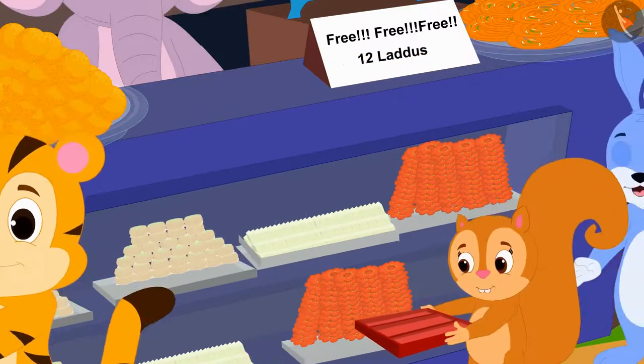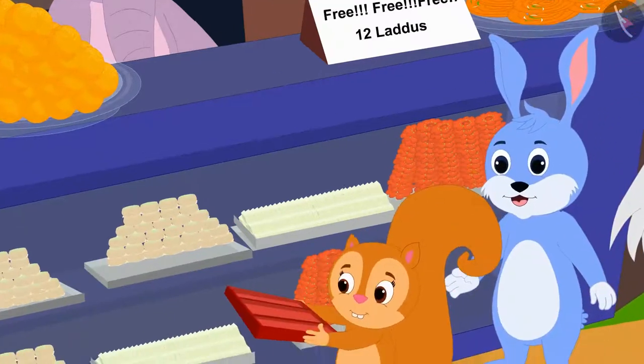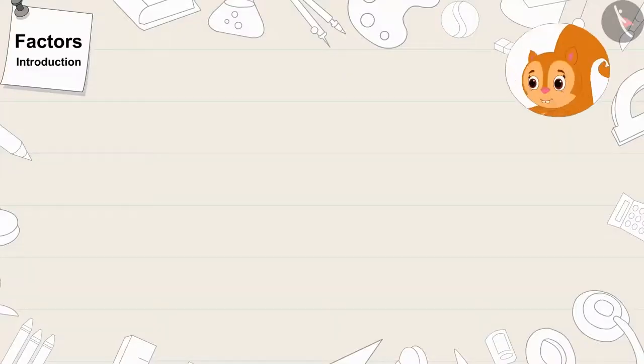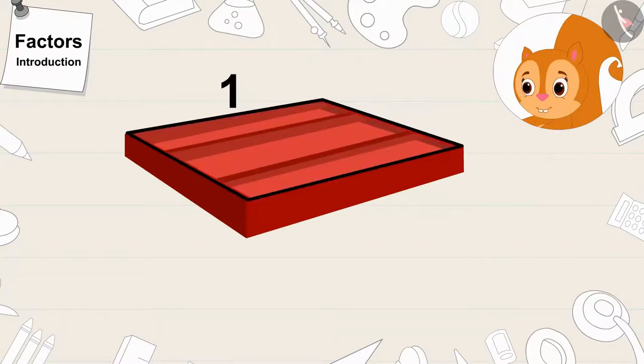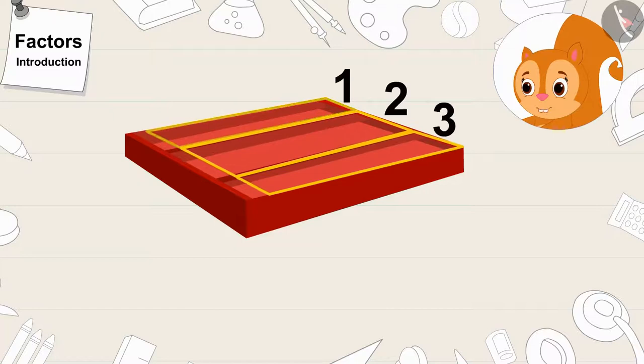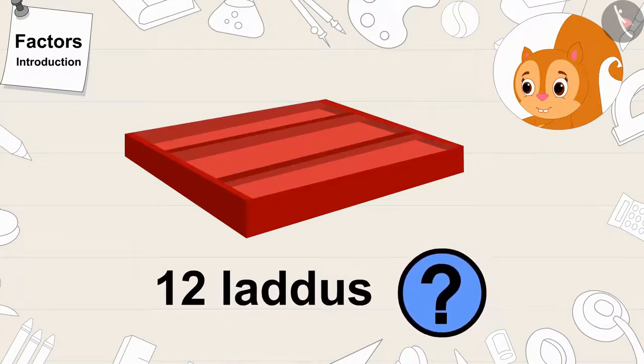Let's see who's next in the queue. Chanda is next in the queue. Chanda's box has one vertical line and 3 slots. Will 12 laddus fit in Chanda's box too?